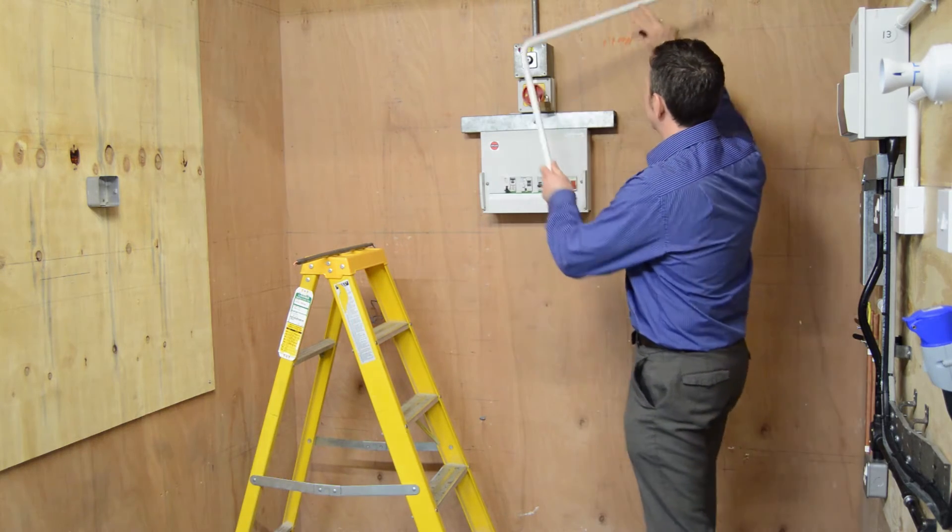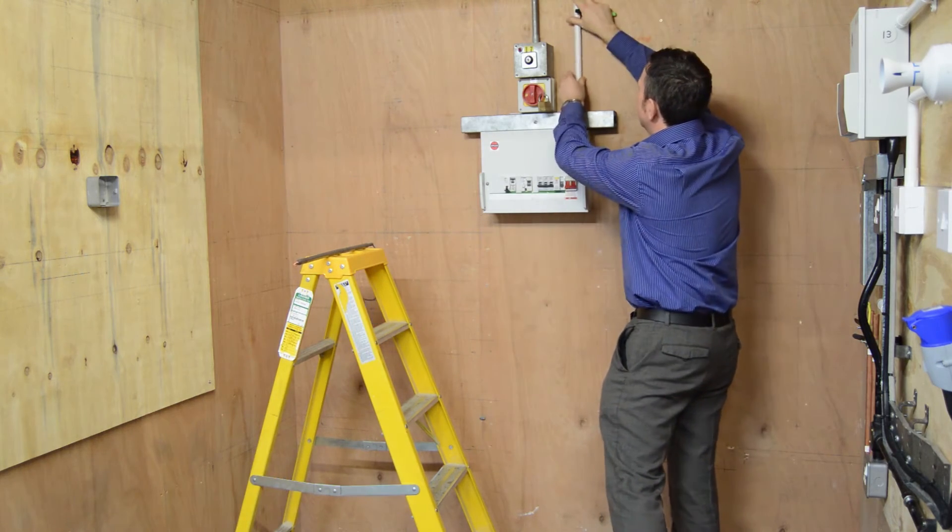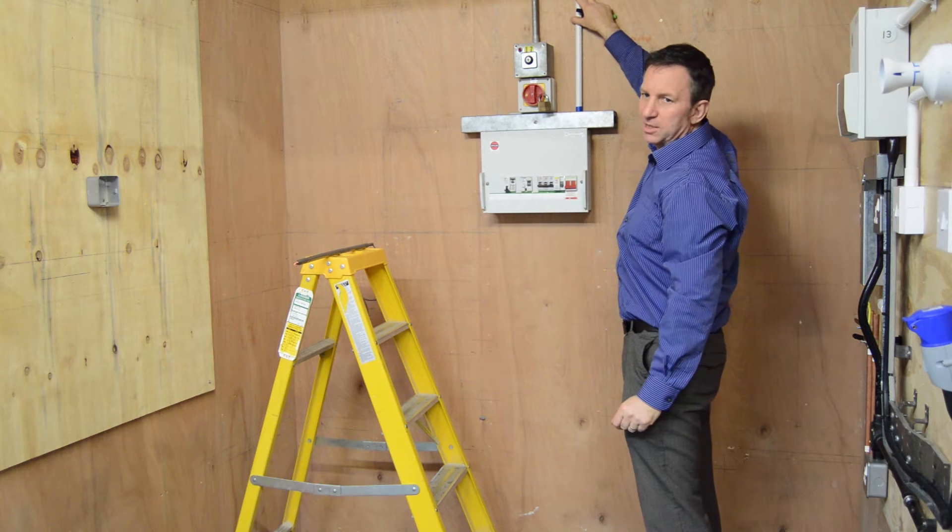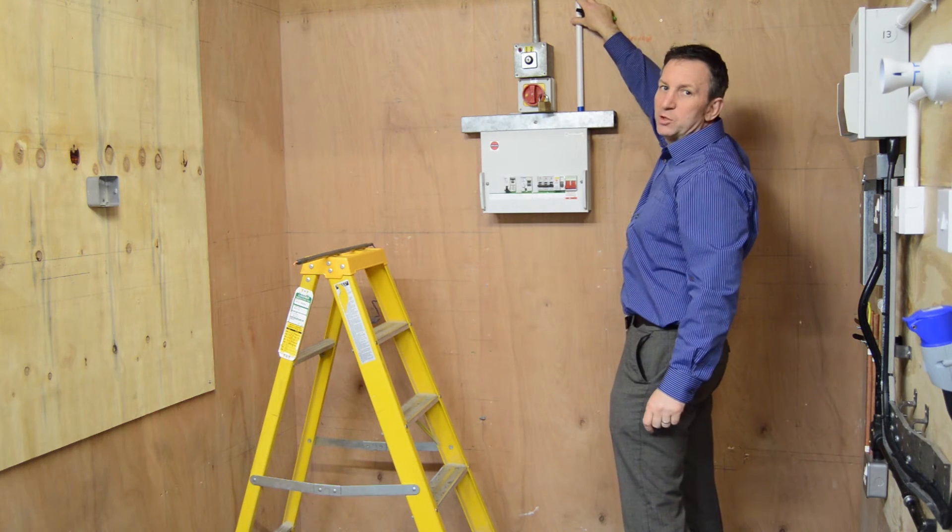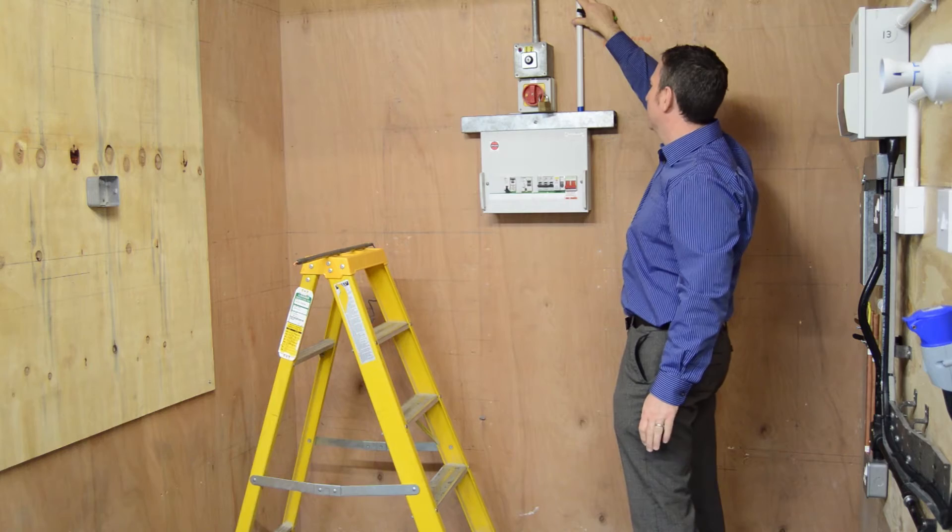That enables the conduit to sit firmly against the wall and still make the accessory. The one we're using here is a piece of 20mm metal conduit.